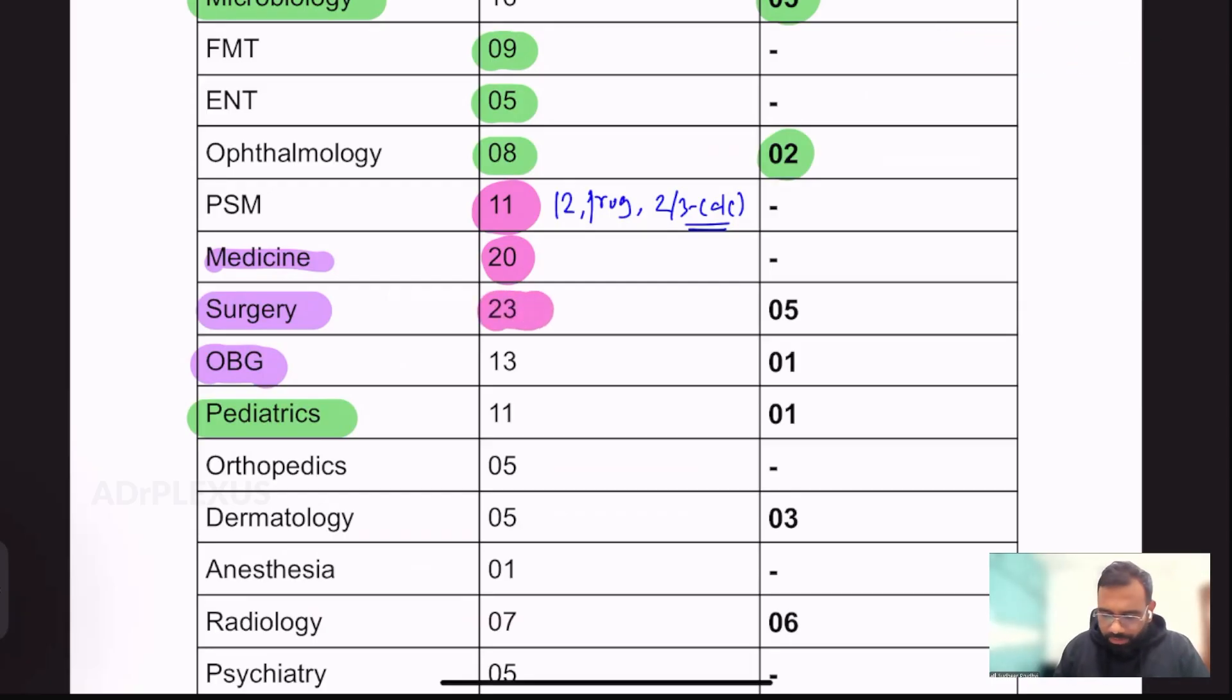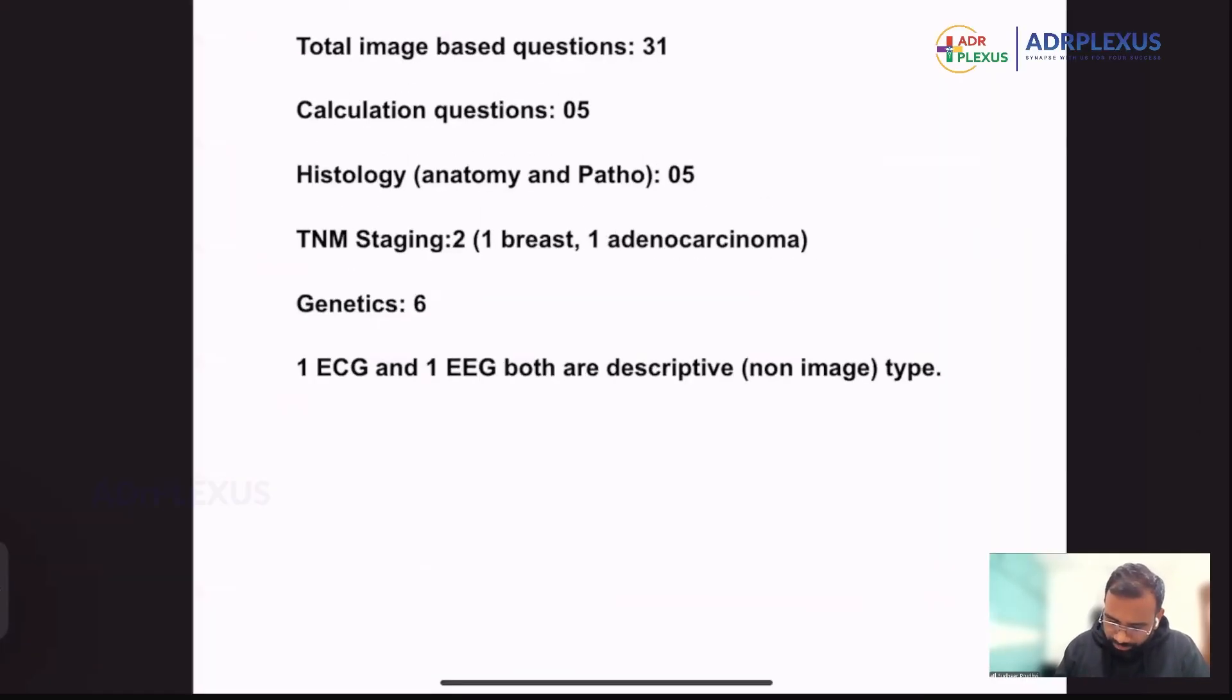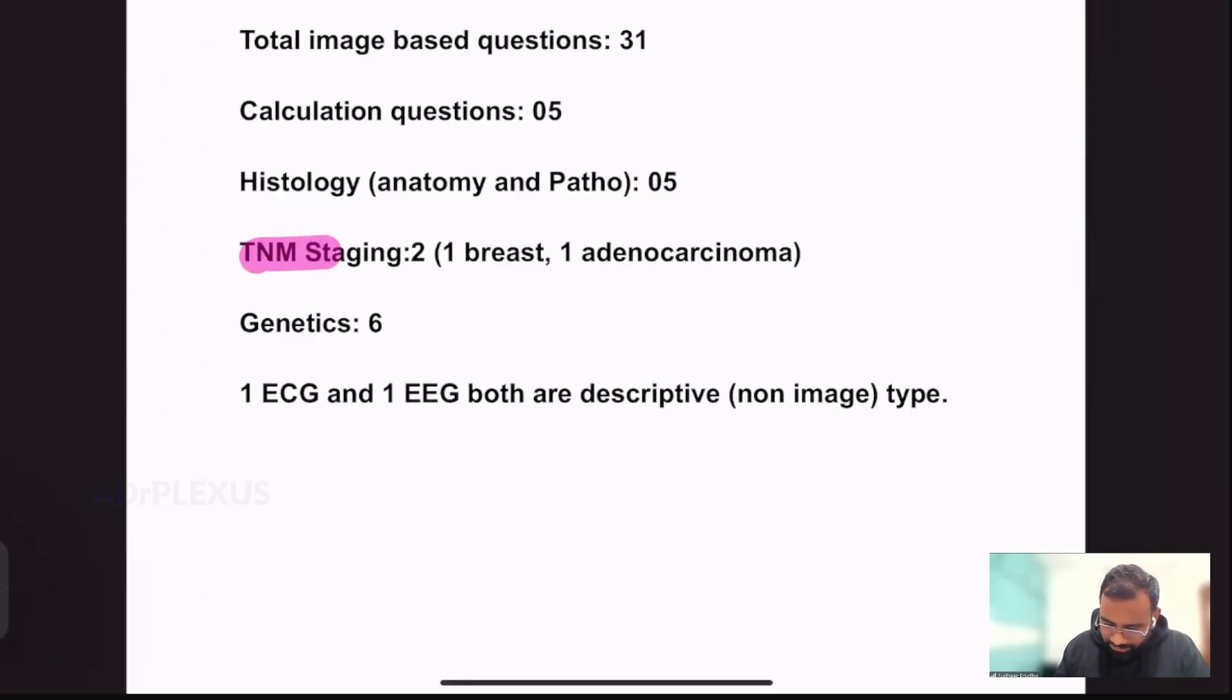In surgery also, I could see five image-based things. In those 23 questions, like as I mentioned before here, we can see two TNM stagings in surgery. One is from breast and second one is that colonoscopic adenocarcinoma, like with mucosal involvement, without lymph node involvement, what is the stage. I think in breast that is T4B, I think so. So this is what TNM staging with the surgery part.